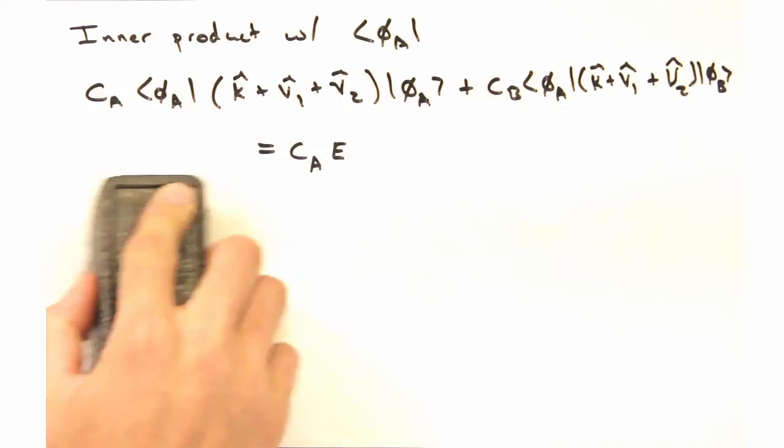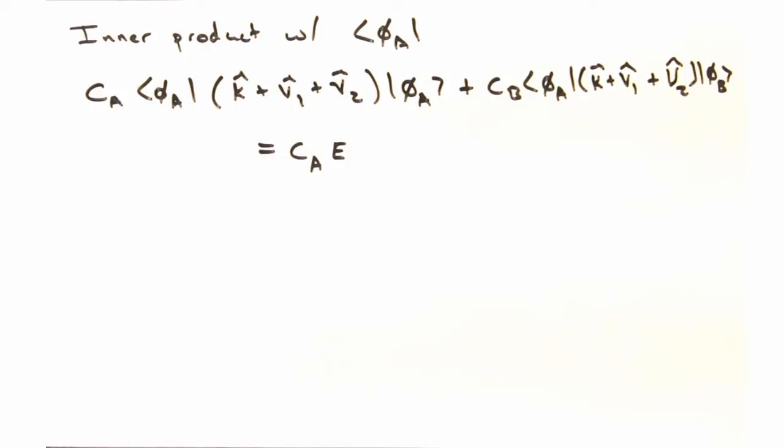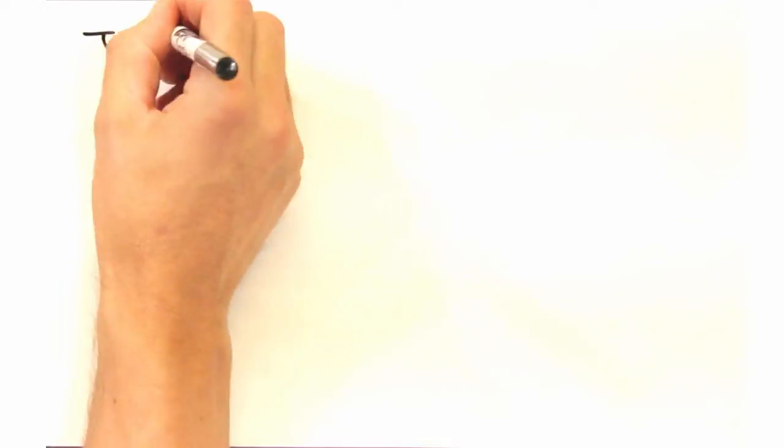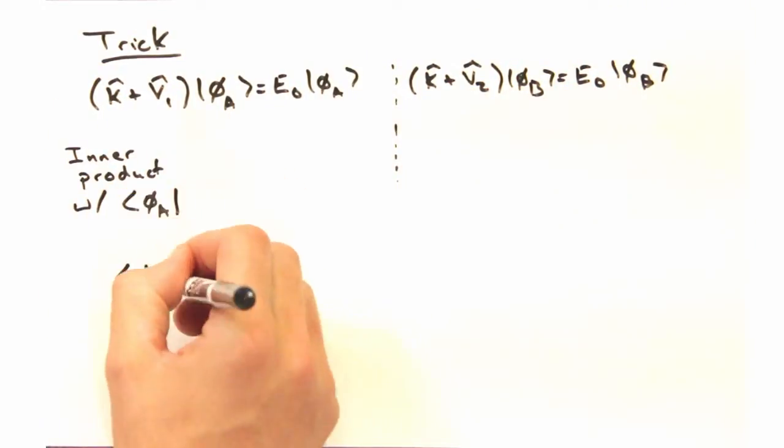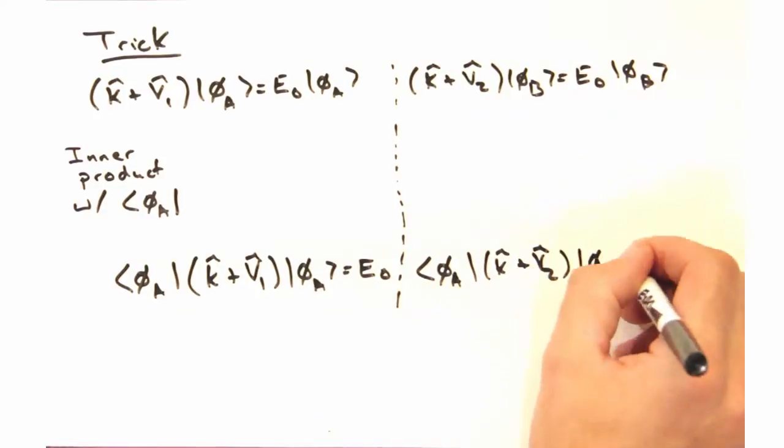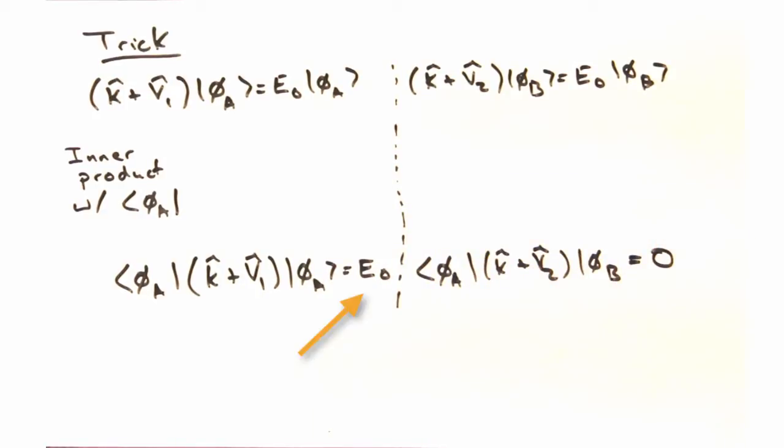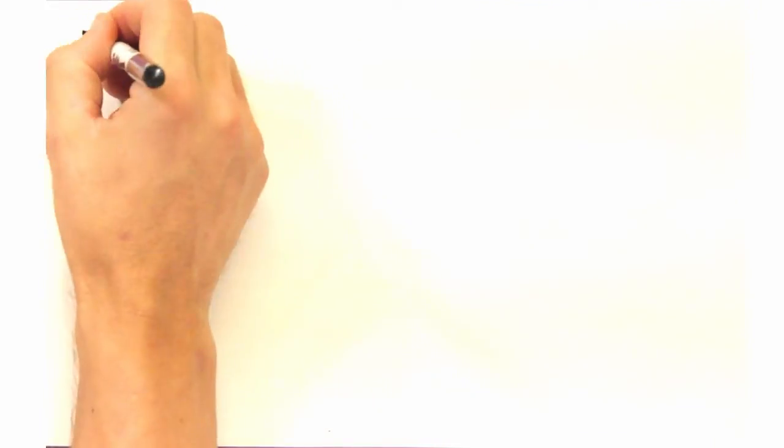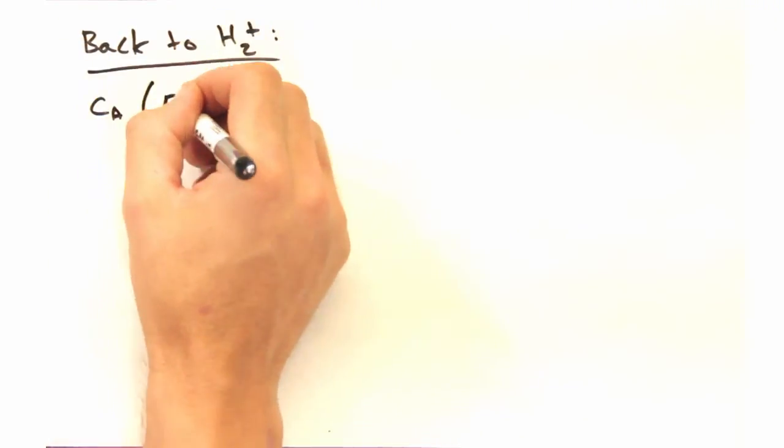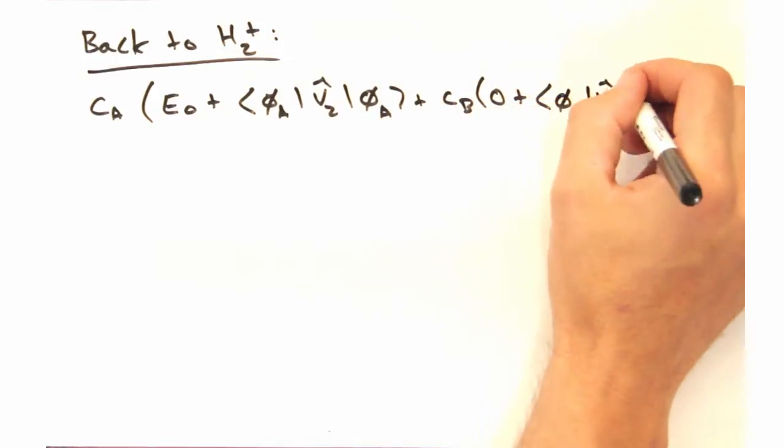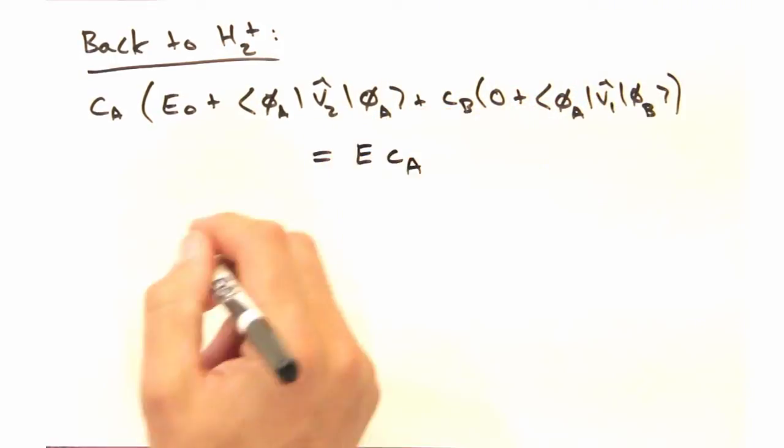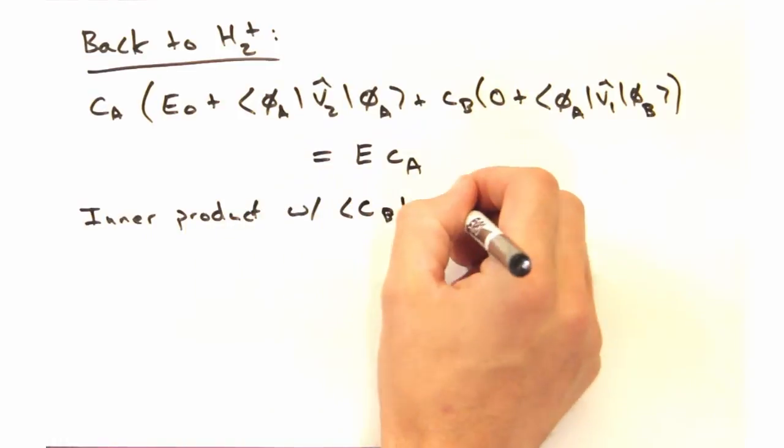Is there anything we can do with the orthogonality of the phis to simplify this down? So let's go back to our original equations for each isolated atom. If you take the inner product with phi A, we find one of them goes to 0 and the other goes to the energy of the isolated atom. Cool. Going back to the H2 plus molecule, we can do some substitutions and get this fairly simplified expression. And by the same argument, we can take the inner product of the other phi and get this expression.